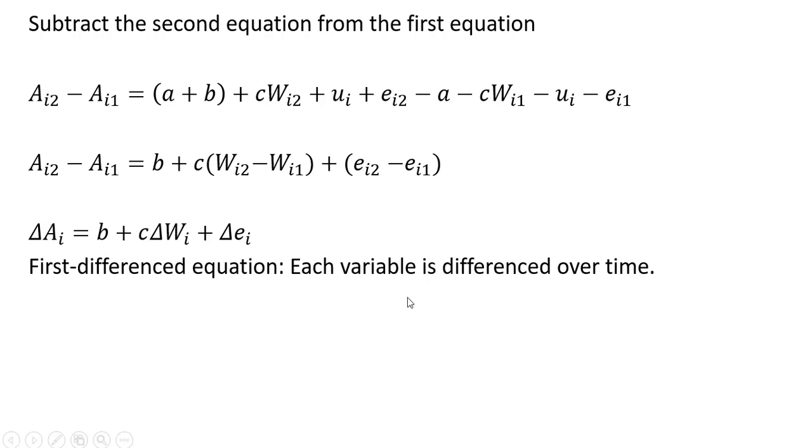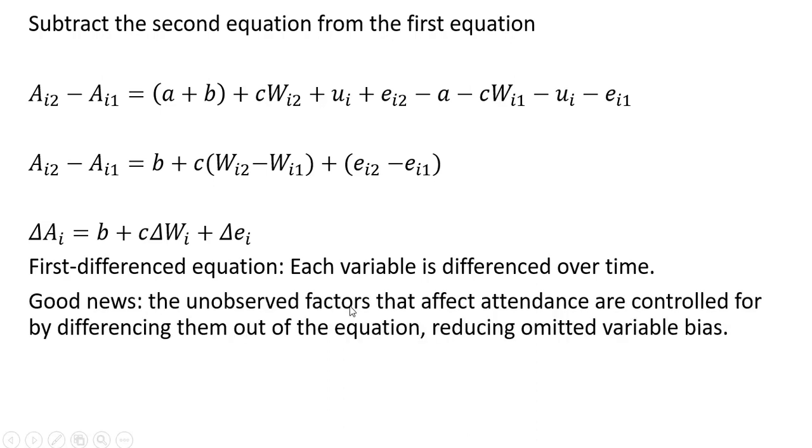The good news is that the unobserved factors that affect attendance are controlled for by differencing them out of the equation, and this will reduce omitted variable bias. B is going to be the change in the intercept from year one to year two. And let's show how to do this in Excel.